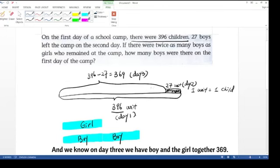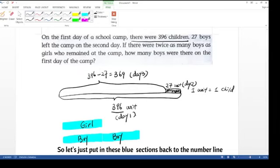And we know on day 3, we have boy and the girl together, 369. So let's just put in this blue section back to the number line to help us visualize the problem.